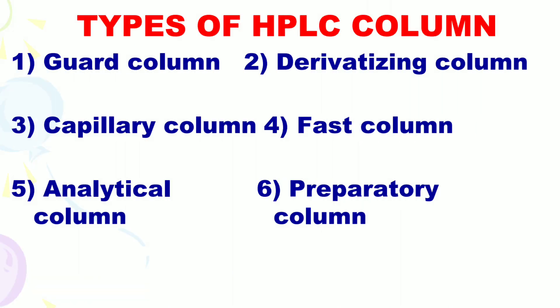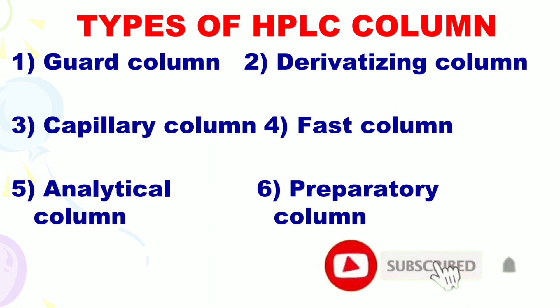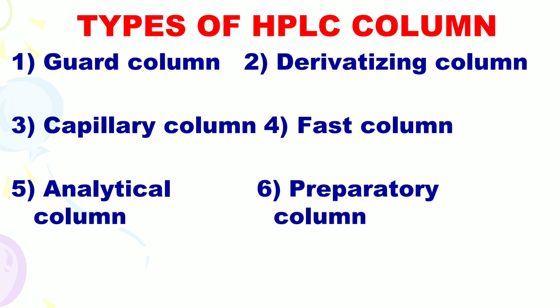Types of HPLC columns. There are various columns that can be used in the HPLC method. These are as follows: guard column, derivatization column, capillary column, fast column, analytical column, and preparatory column.